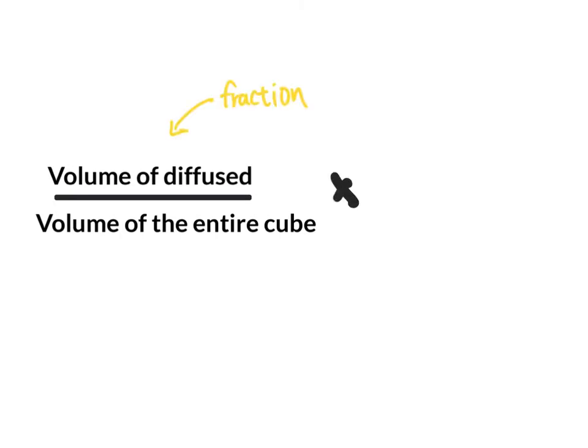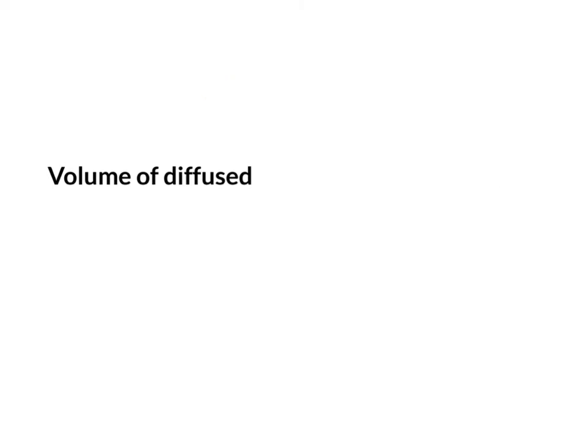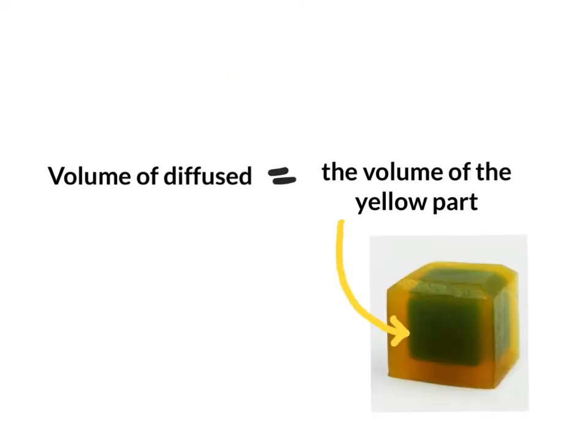So the volume of the diffused is basically the volume of this yellow part right here. It's the volume of the cell that the vinegar actually reached.